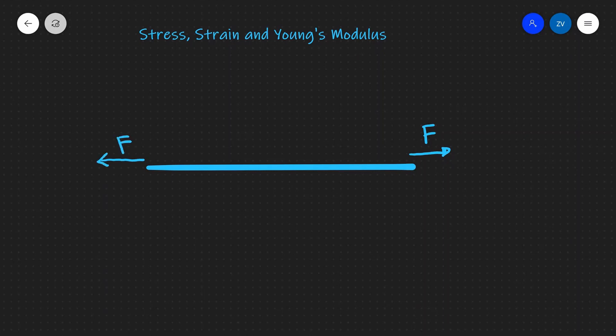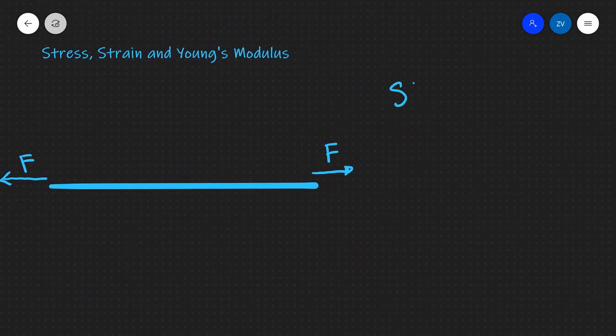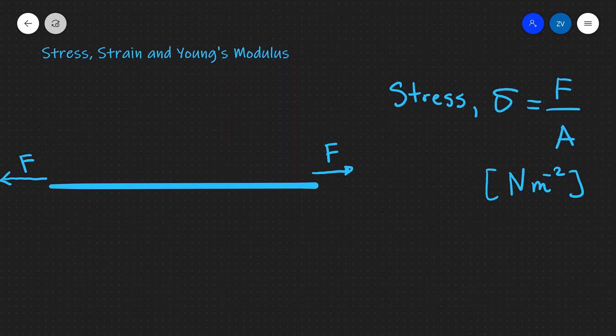We apply a force F which attempts to stretch this wire. The stress is normally given the Greek letter sigma (σ), and it's defined as the amount of force per unit cross-sectional area. The units of stress are therefore newtons per meter squared (N/m² or N⋅m⁻²).